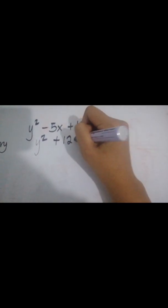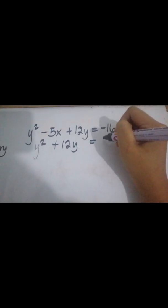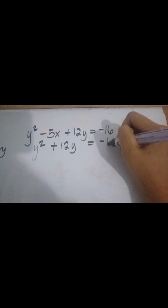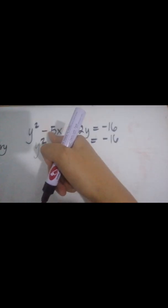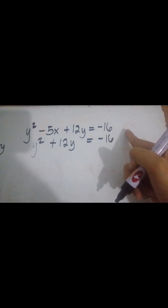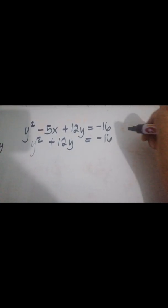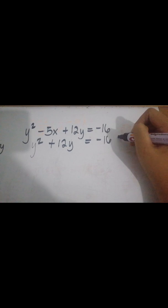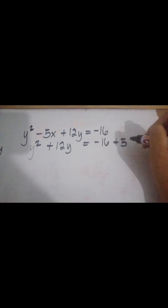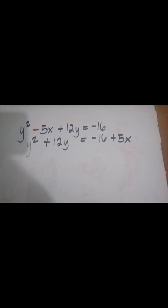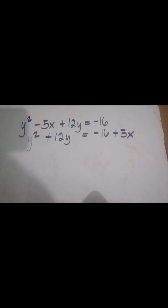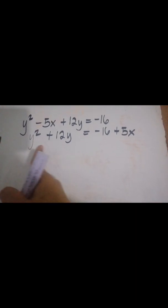So we have y squared plus 12y equals negative 16. Negative 5x, once transferred to the right side, becomes positive — so plus 5x. After that, as you can see on the left-hand side, we can now perform completing the square.